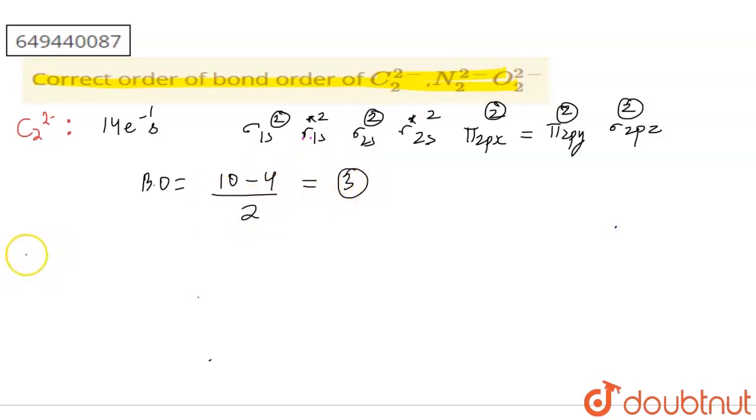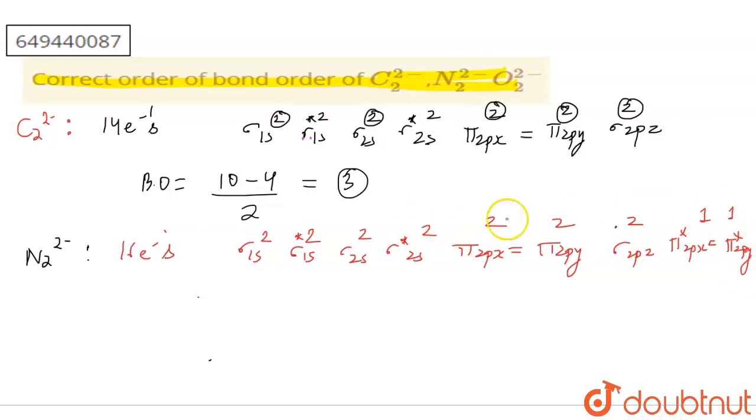Now N2 2-: nitrogen is 7, two nitrogens is 14, plus 2 electrons gives 16. This is the same type of case with similar configuration. Filling 16 electrons: bonding electrons are 10, antibonding electrons are 6. So bond order is (10-6)/2 = 2.